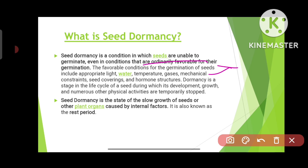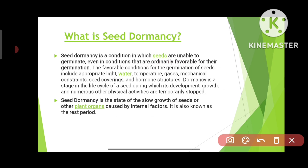Dormancy is a stage in the life cycle of a seed during which its development, growth, and numerous other physical activities are temporarily stopped. It is the state of slow growth of seeds or other plants caused by internal factors, and it is also known as the rest period. In this state, the growth of the seed becomes slow, which can be caused by some internal or external factors.